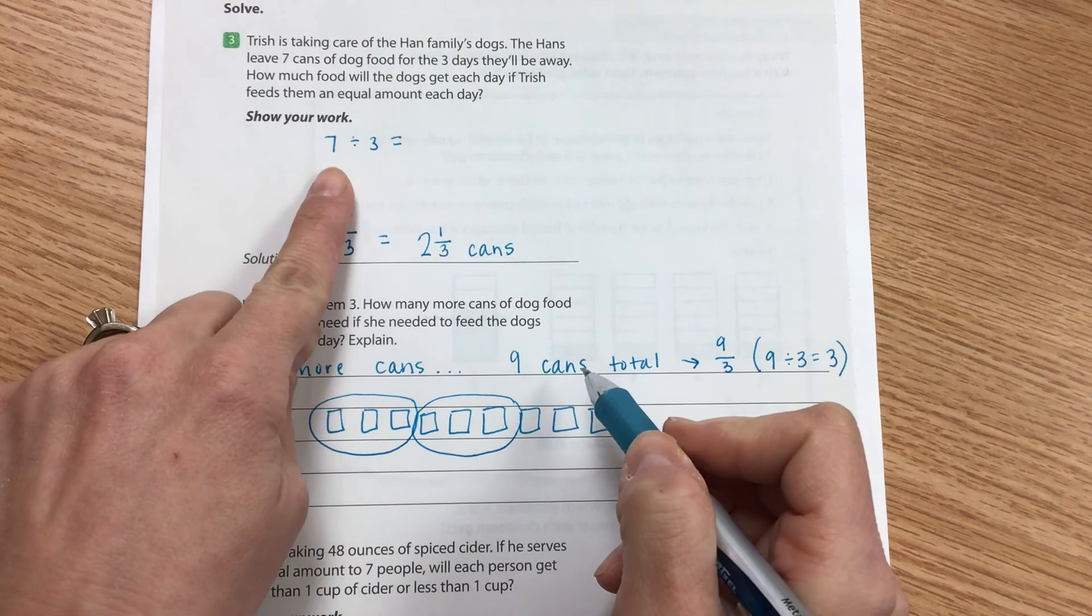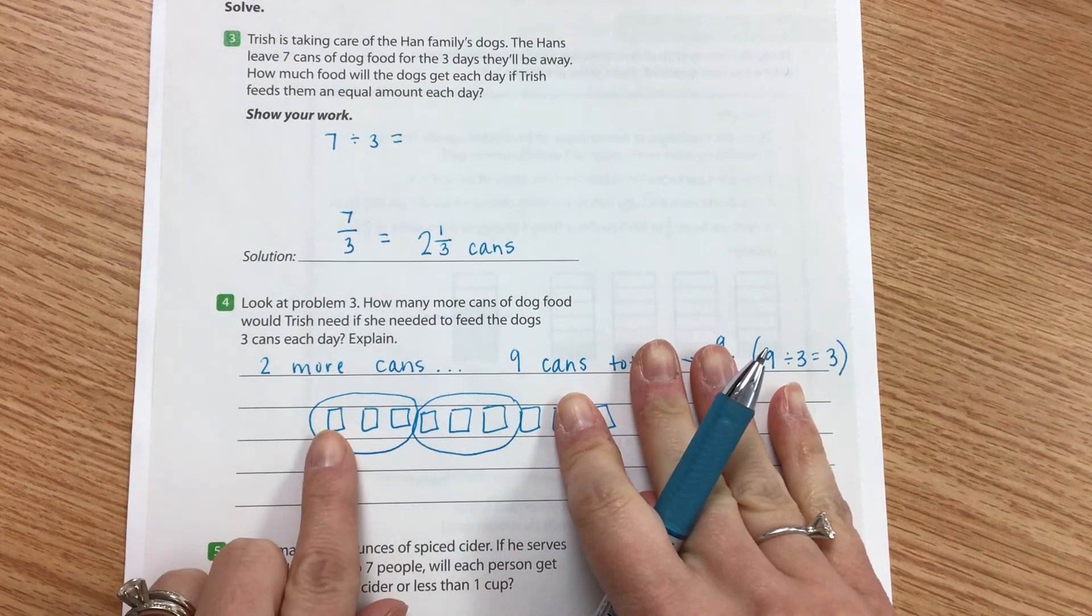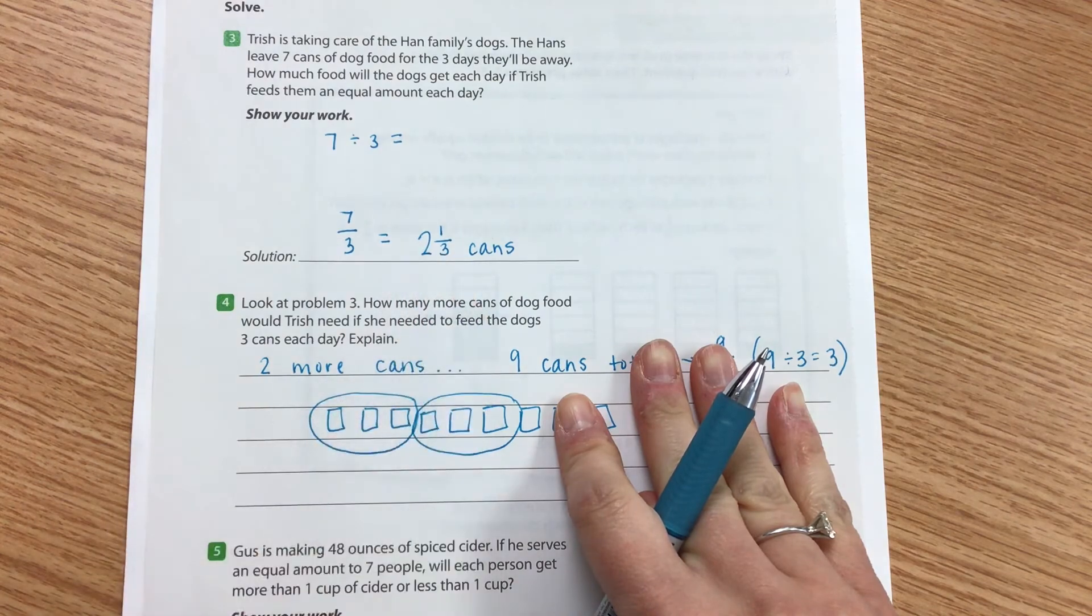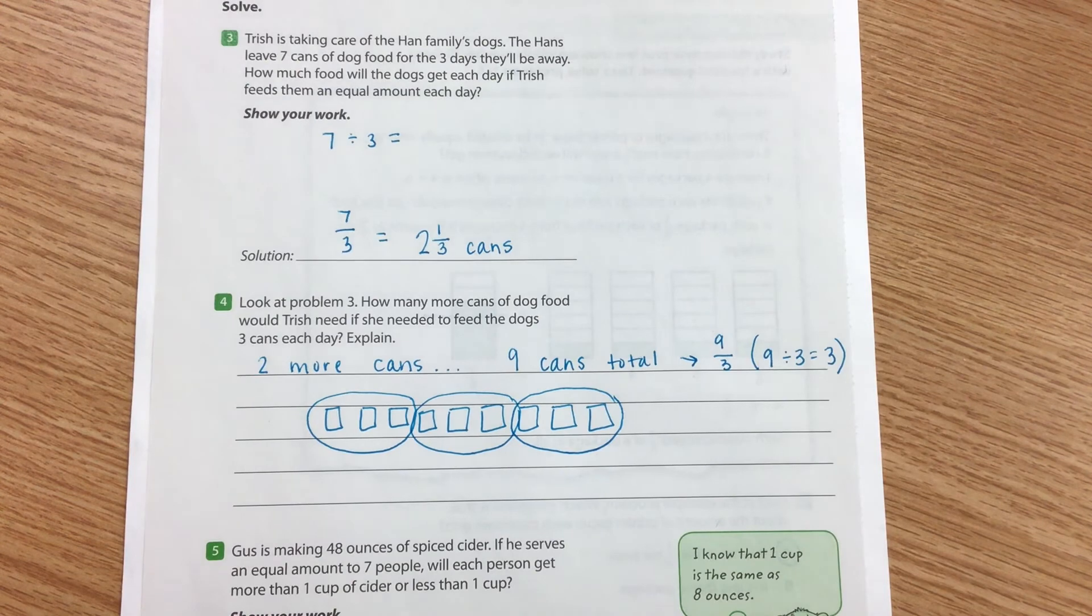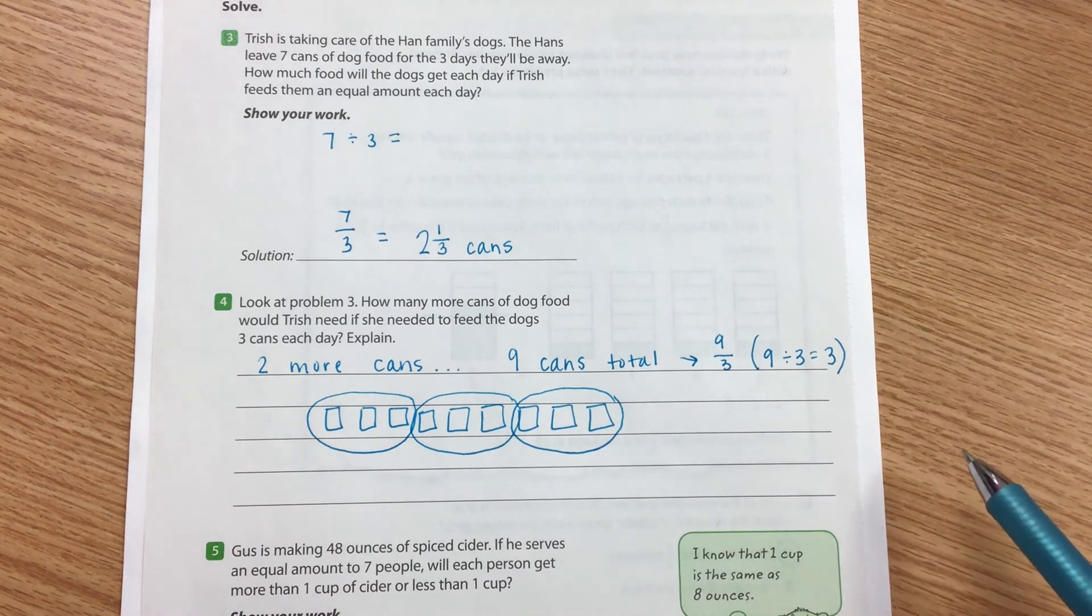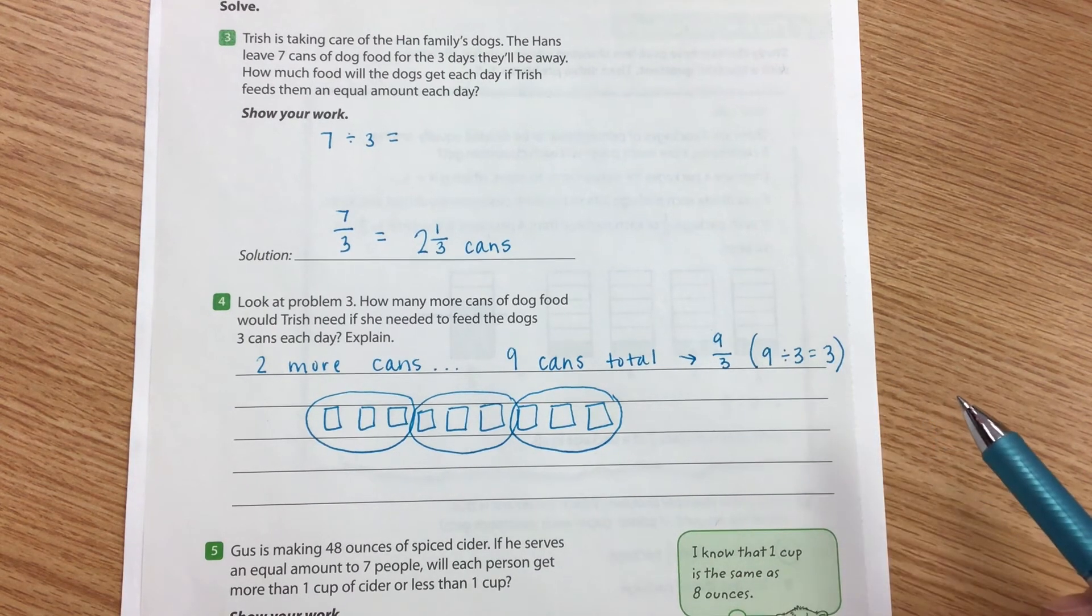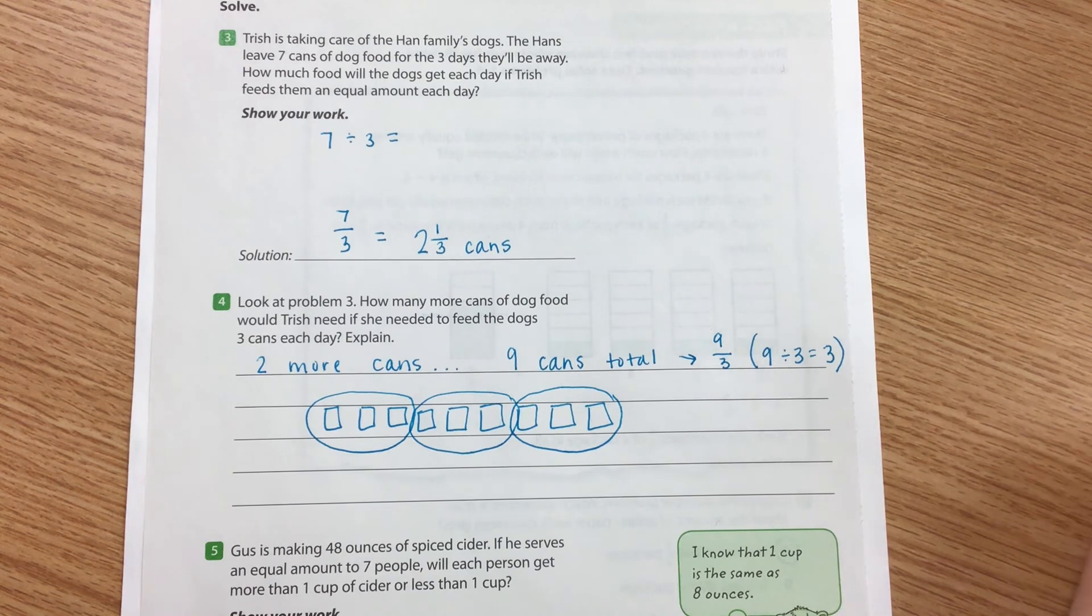We originally had seven cans which would be stopped right here and we were having to go every two and one-third. Now we're going to go ahead and have three where we're able to divide it by three. So two more cans right here gave us nine cans total which we're still dividing it by three. So we could go ahead and feed our dogs three cans each day for the three days that the Hans are out of town.